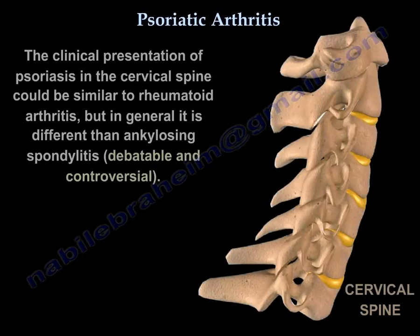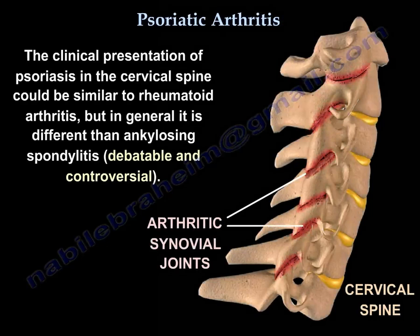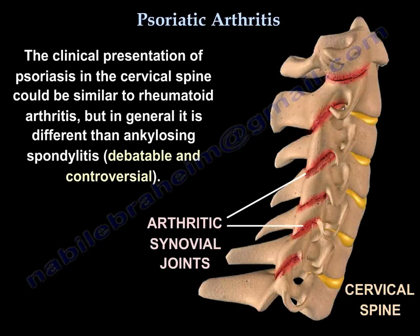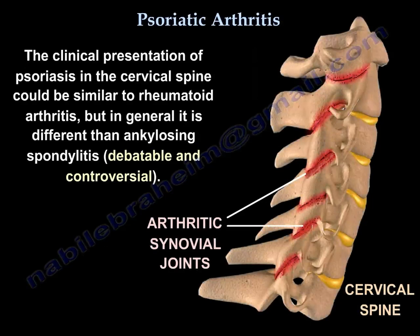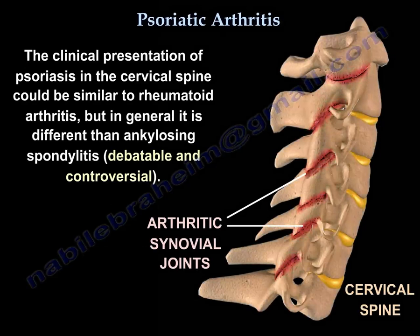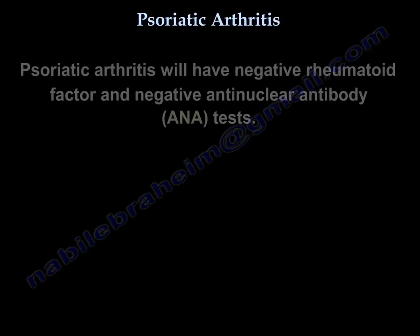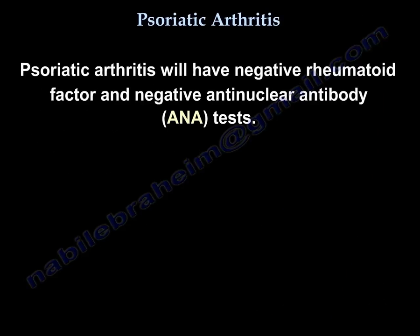The clinical presentation in psoriasis and the cervical spine could be similar to rheumatoid arthritis, but in general it is different from ankylosing spondylitis. Psoriatic arthritis will have a negative rheumatoid factor and negative anti-nuclear antibody tests.